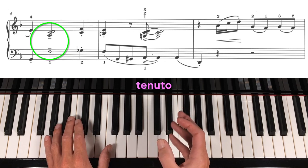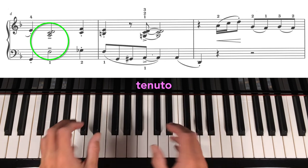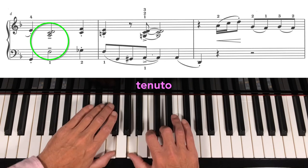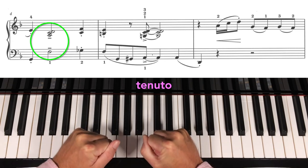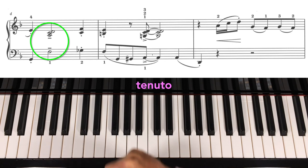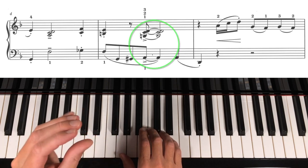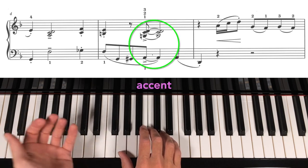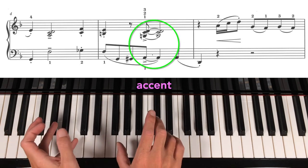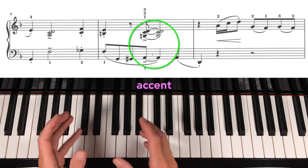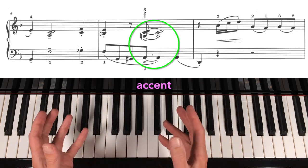And I like to think of a tenuto sign as being bold font. It's like a lean on it, give it its full value, a bit more pressure. Whereas, in the following bar, we have an accent. Quite simply, a bit of extra pressure, a bit of a whack, but give the note whatever value it's meant to have.